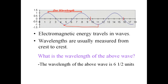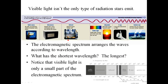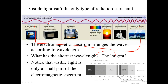The electromagnetic spectrum arranges waves according to wavelength. Here you can see the complete electromagnetic spectrum. Gamma rays have the shortest wavelengths — you can see in the picture really, really short wavelengths. The longest wavelengths are radio waves, with very long waves visible up here. All the other types fit in between.